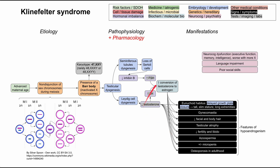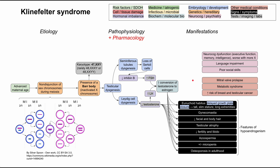There are also many neurocognitive and psychiatric features. Patients will have problems with executive functioning, memory, and intelligence, and these tend to get worse with more X chromosomes — so 48XXXY would show worse neurocognitive dysfunction than 47XXY. Patients will also have language impairment and poor social skills. Other medical conditions include mitral valve prolapse, metabolic syndrome, and an increased risk of breast and testicular cancer.